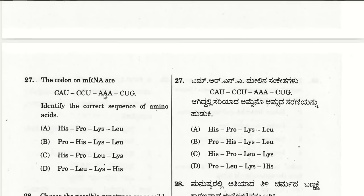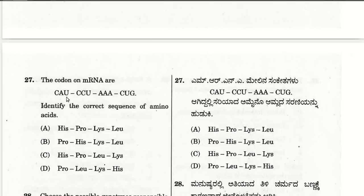The twenty-seventh question: the codons on mRNA are CAU, CCU, AAA, CUG — identify the correct sequence of amino acids. CAU is histidine, CCU is proline, AAA is lysine, and CUG is leucine. So the first choice A is the right answer for this amino acid sequence.